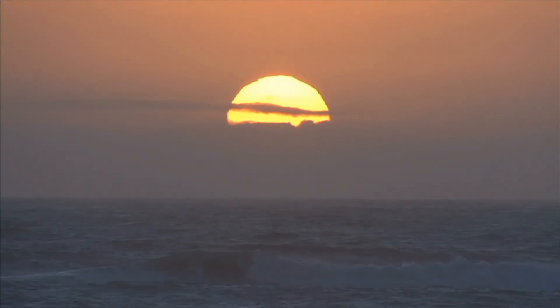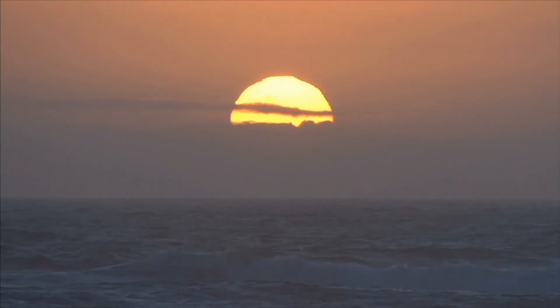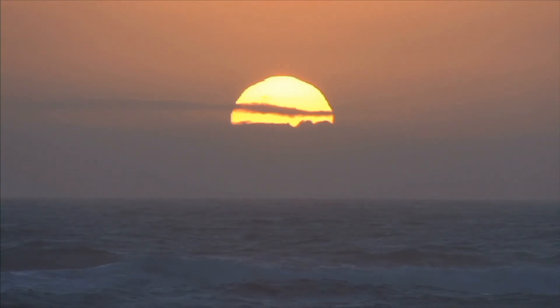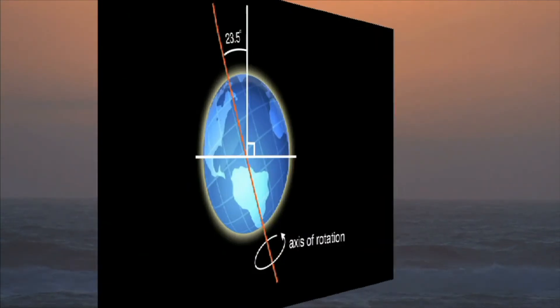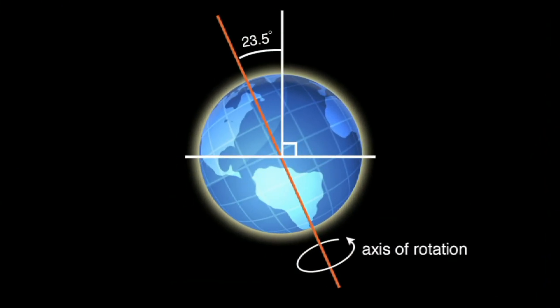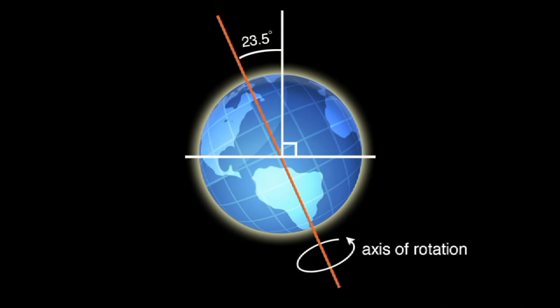Now that you better understand solstice, think about this: what would happen if the Earth wasn't tilted 23.5 degrees?